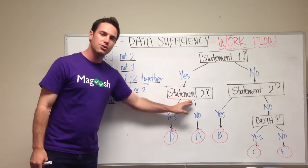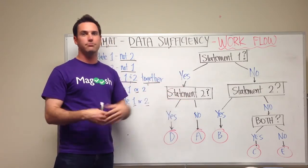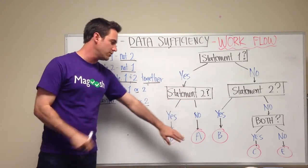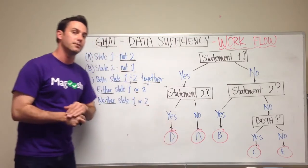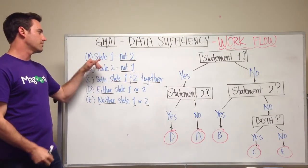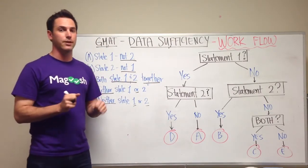If you get to statement 2 and it doesn't help you at all, you don't get the answer using statement 2, then the answer is going to be A, which means just statement 1, not 2, is sufficient.